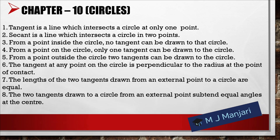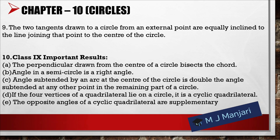Eighth, the two tangents drawn to a circle from an external point subtend equal angles at the center. Ninth, the two tangents drawn to a circle from an external point are equally inclined to the line joining that point to the center of the circle. Tenth, important results from Class 9: (a) perpendicular drawn from the center of a circle bisects the chord; (b) angle in a semicircle is a right angle; (c) angle subtended by an arc at the center is double the angle subtended at any point in the remaining part; (d) if all four vertices of a quadrilateral lie on a circle, it is a cyclic quadrilateral; (e) the opposite angles of a cyclic quadrilateral are supplementary.